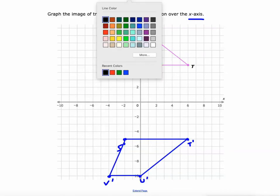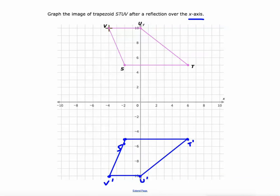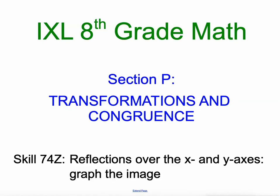And one more time, I think I'll join with these red lines here. If we connect corresponding vertices, which isn't a necessary process, you can see that each one of these red lines hits the x-axis at a 90 degree angle. And each one is cut in half by the x-axis. So a little lesson on reflecting over the x and y-axis. Section P of IXL's eighth grade math. Good luck.